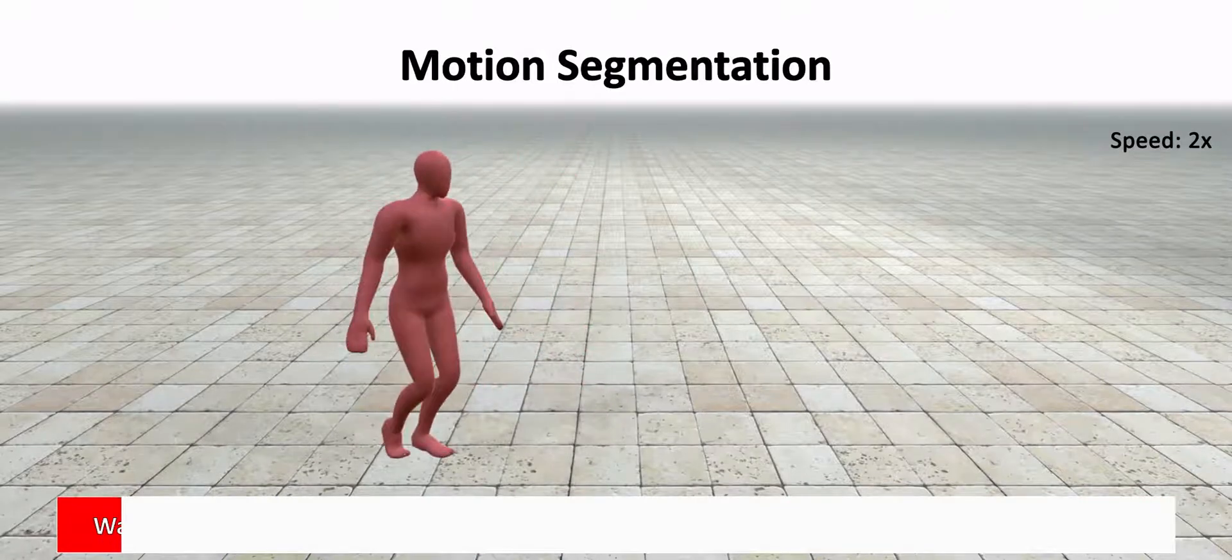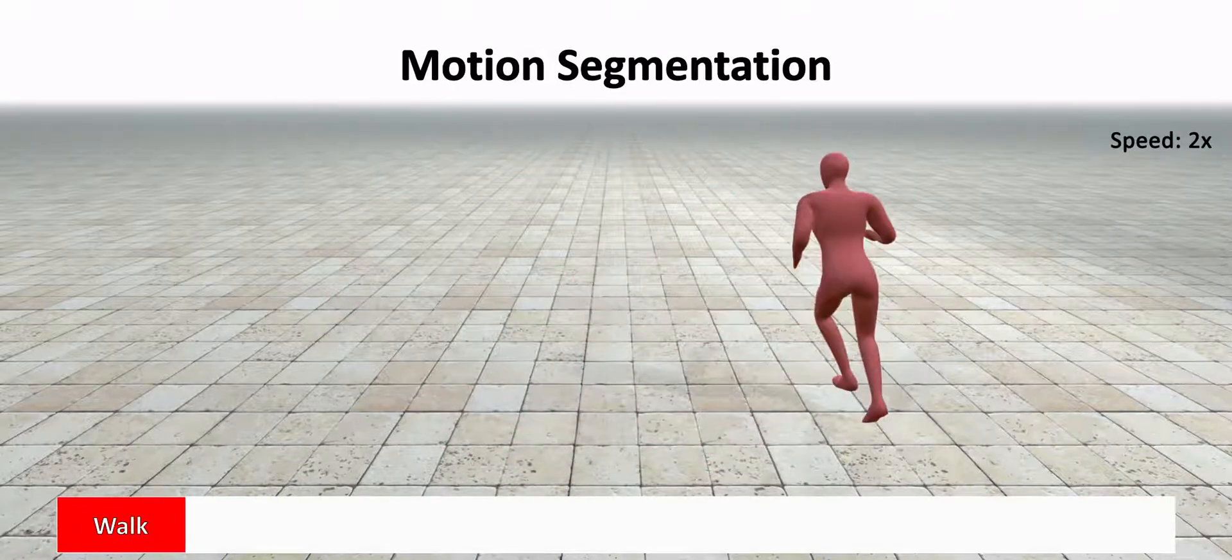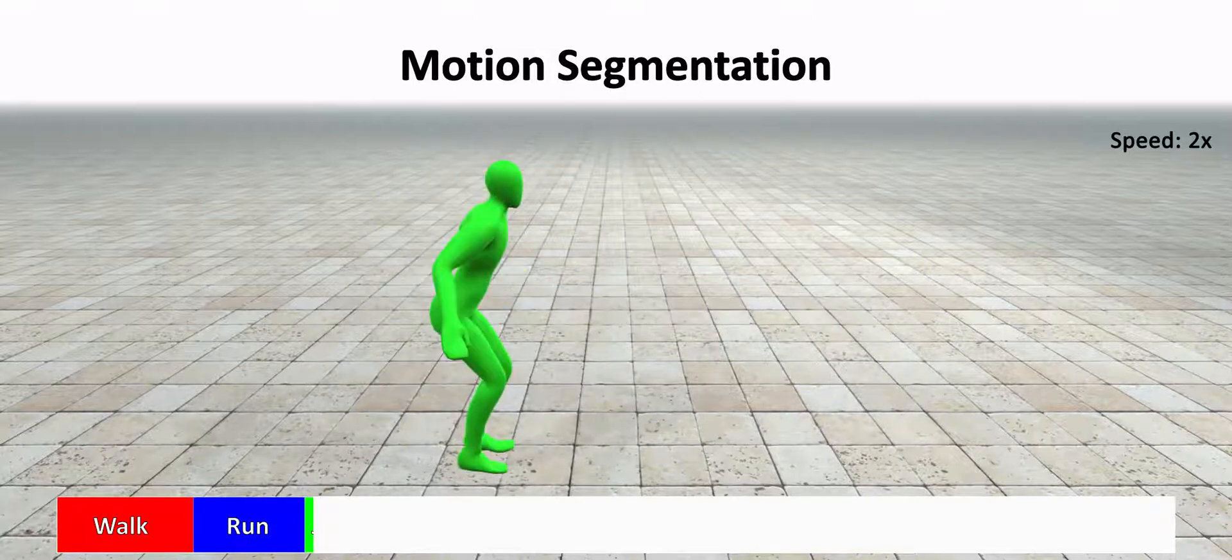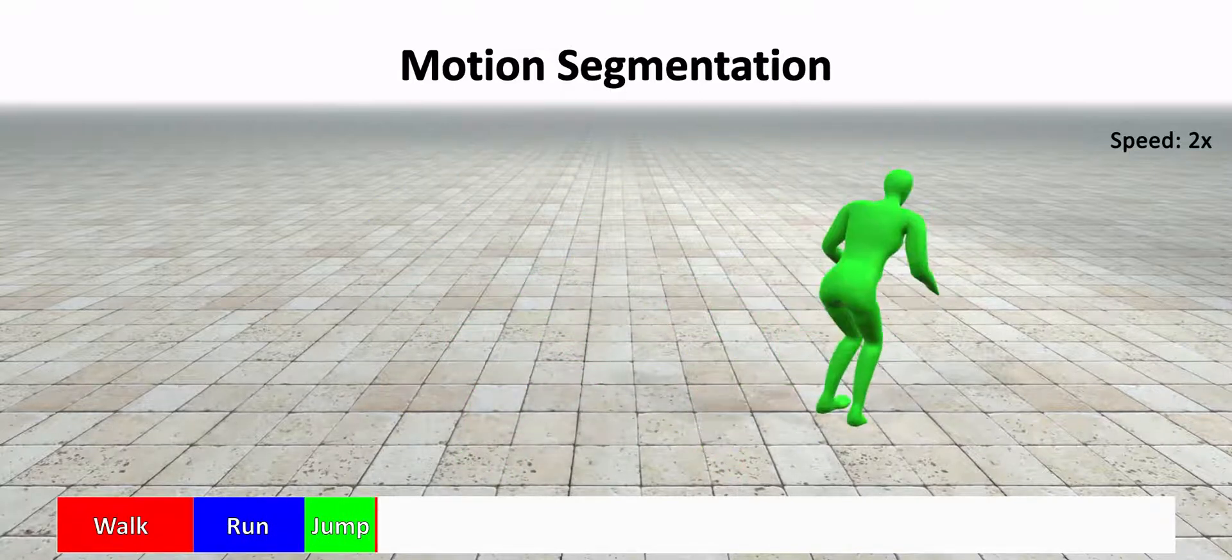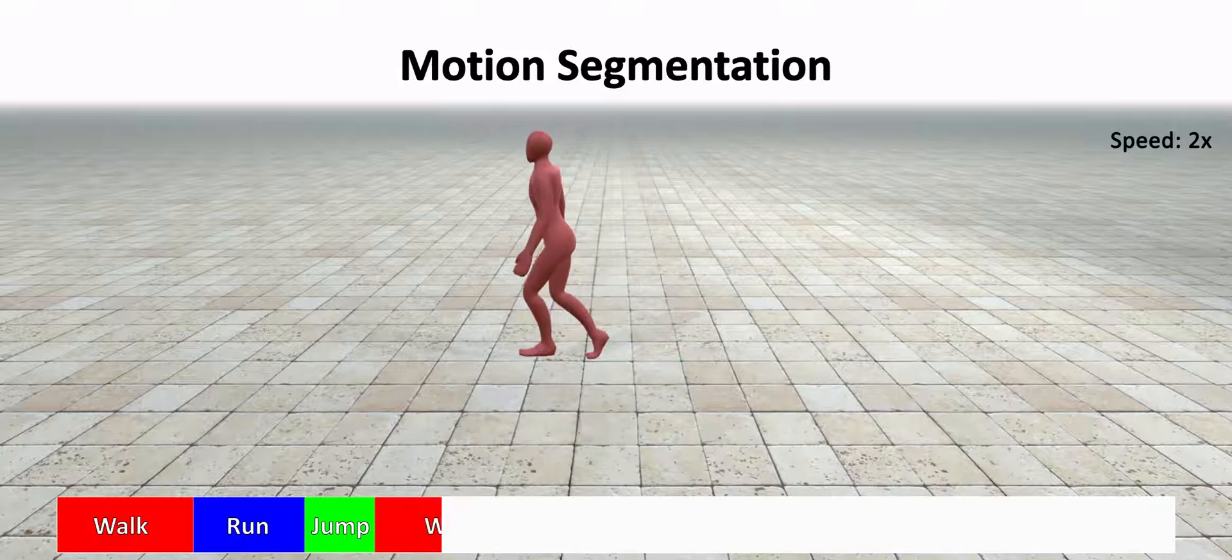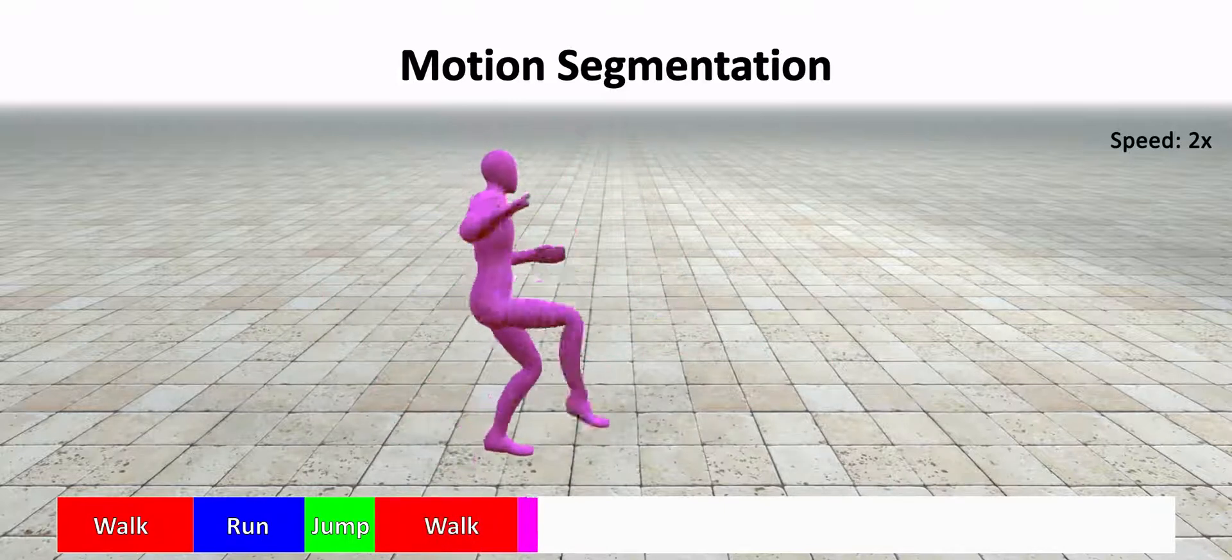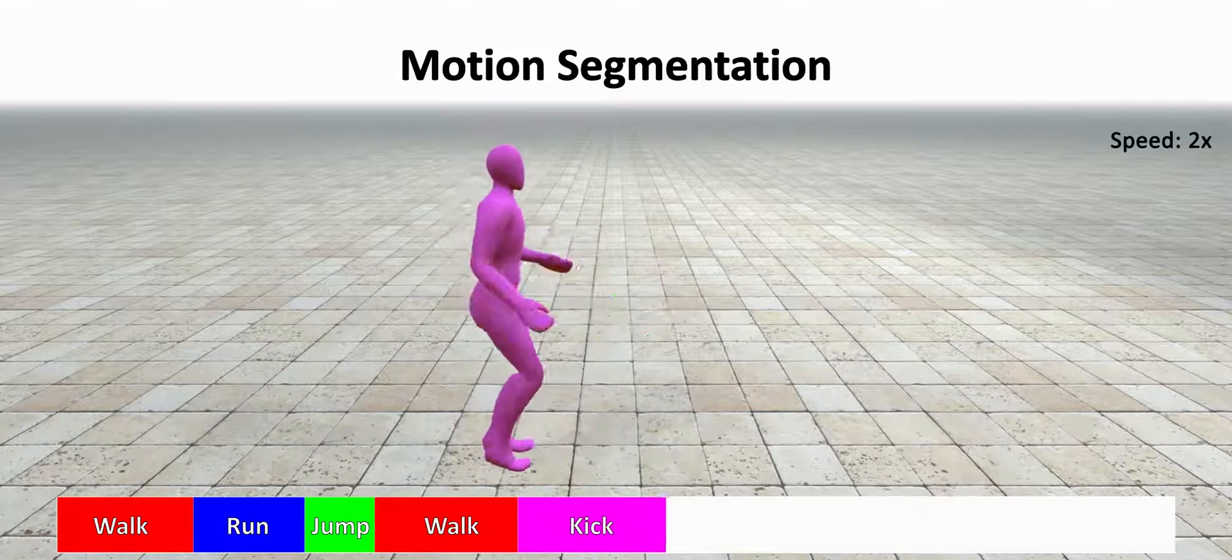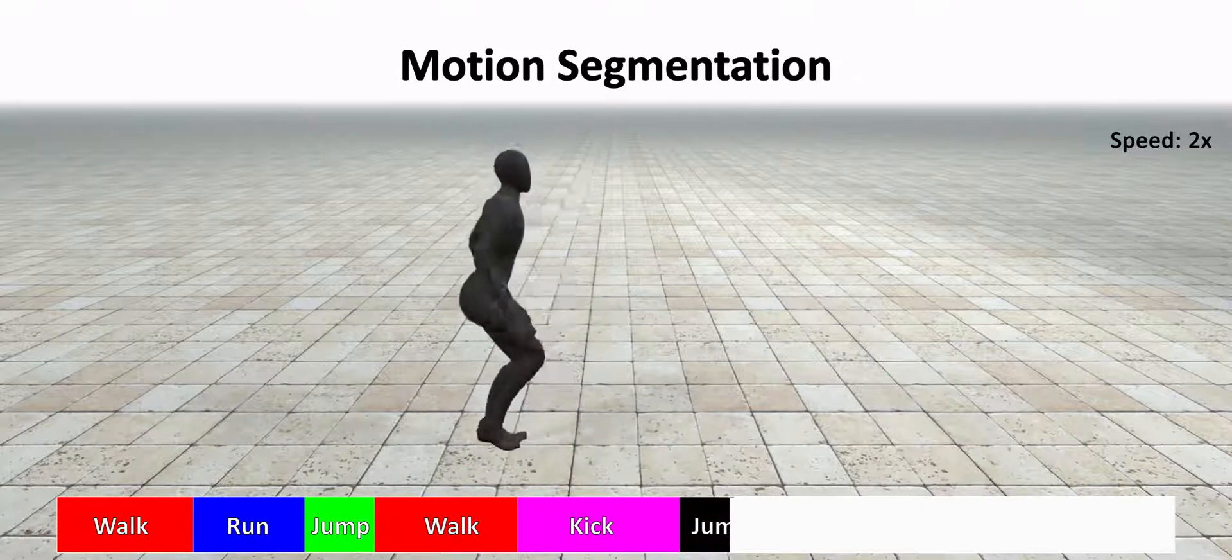Temporal segmentation of human motion sequences into distinct motion primitives is crucial for synthesizing, classifying, and understanding human actions. Using signatures, we can efficiently classify motion sequences into pre-trained classes of actions, segmenting motions into shorter motion primitives.